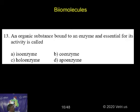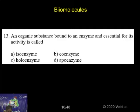An organic substance bound to an enzyme essential for its activity is called what? The total enzyme is called the holoenzyme, which is composed of an apoenzyme and a prosthetic group.